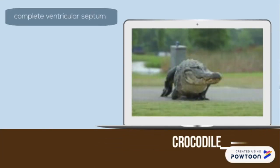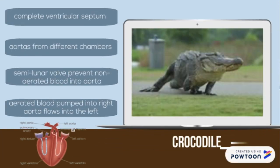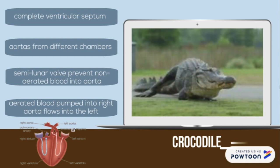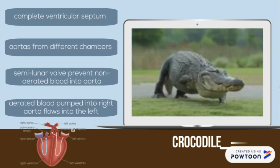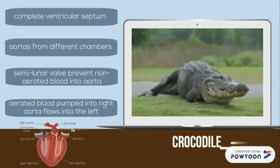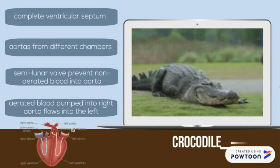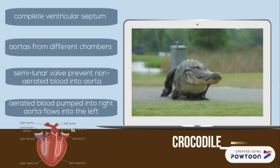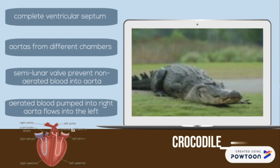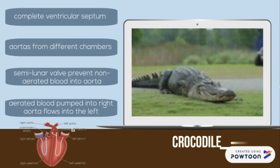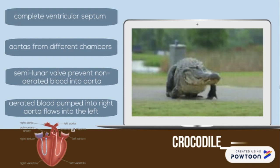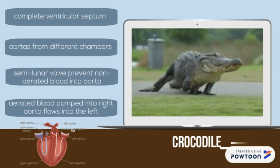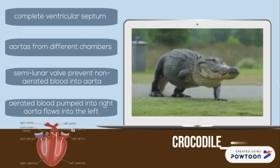In crocodiles, the ventricular septum is complete, but the two aortas come out of different ventricular chambers. A semilunar valve at the entrance to the left aorta prevents non-aerated blood in the right ventricle from flowing into the aorta. Instead, part of the aerated blood from the left ventricular chamber pumped into the right aorta flows into the left by way of an opening.